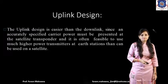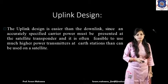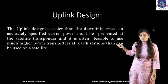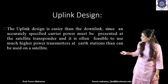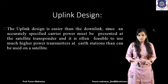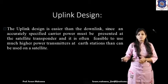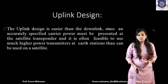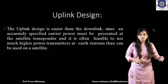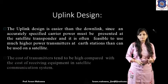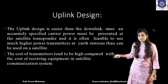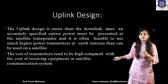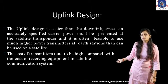The uplink design is much easier than the downlink. We simply need a carrier power to be present at the satellite transponder. The earth station uses a much higher power transmitter, which cannot be used at the satellite because it would be bulkier and increase the cost of the satellite. So we transmit high power from the earth station. The cost of the transmitter is increased because we are using a high power amplifier with high gain, which ultimately increases the cost of the system compared to receiving equipment.